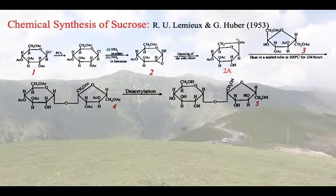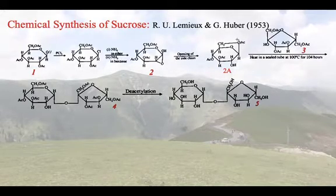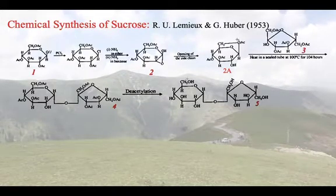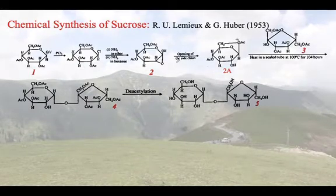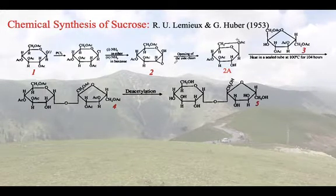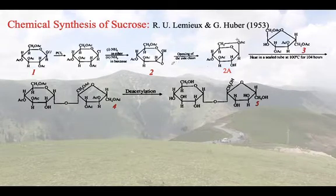But maybe you are not aware of the fact that it took decades for people to synthesize this product. In 1953, Lemieux and Huber were the first to synthesize sucrose. Before that, every time people attempted the synthesis of sucrose, they ended up with the synthesis of isosucrose. So stereochemistry was an important factor necessary for the synthesis of sucrose.